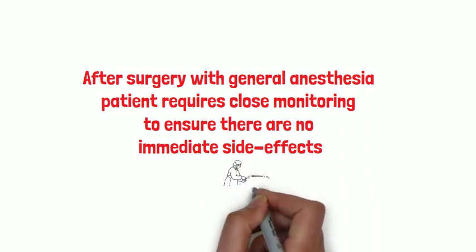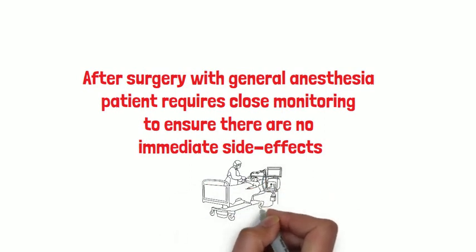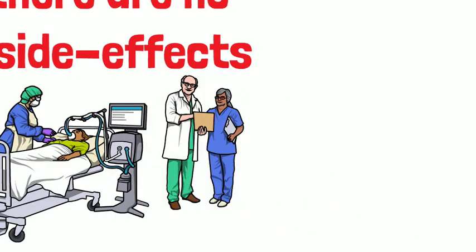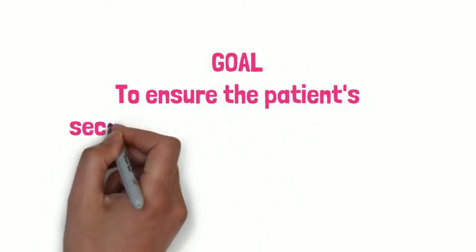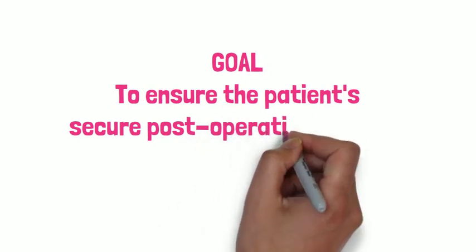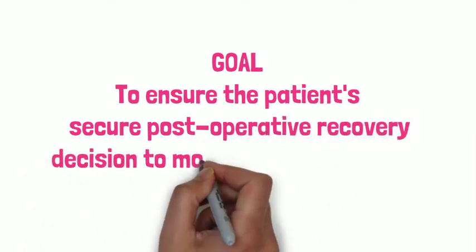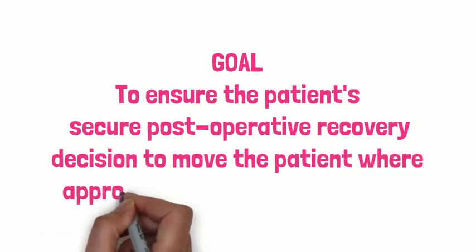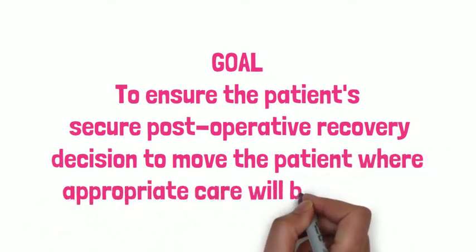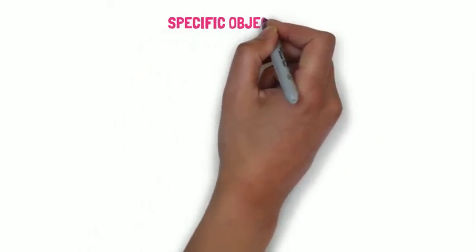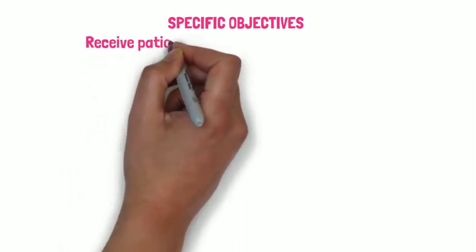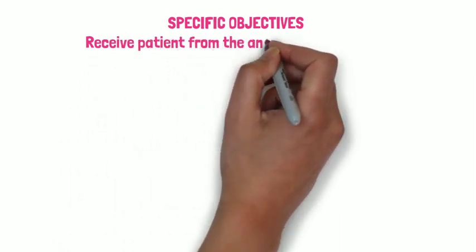In other situations, the patient's recovery is supervised by the surgical team. The goal of the post-anesthesia care unit is to ensure the patient has a safe post-operative recovery immediately following surgery and can be shifted out to the ward or special care as per need. Staff must firstly receive the patient from the operating room and take complete instructions from the anesthetist and the surgeon.